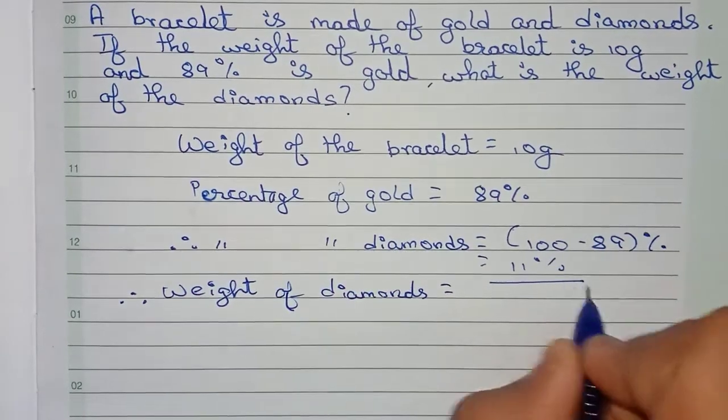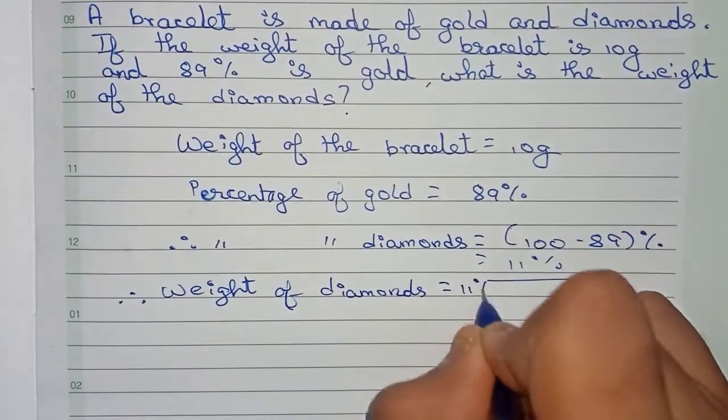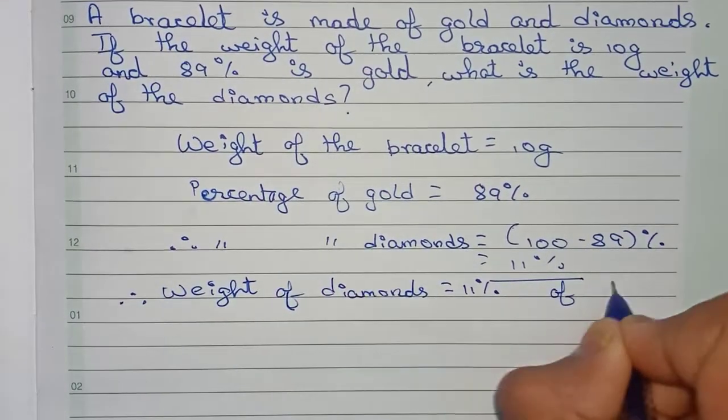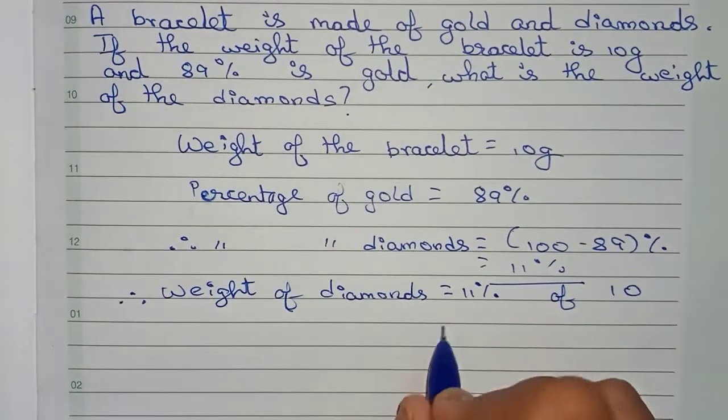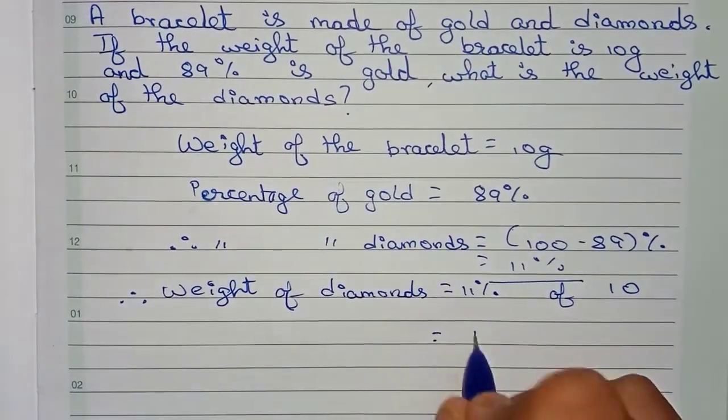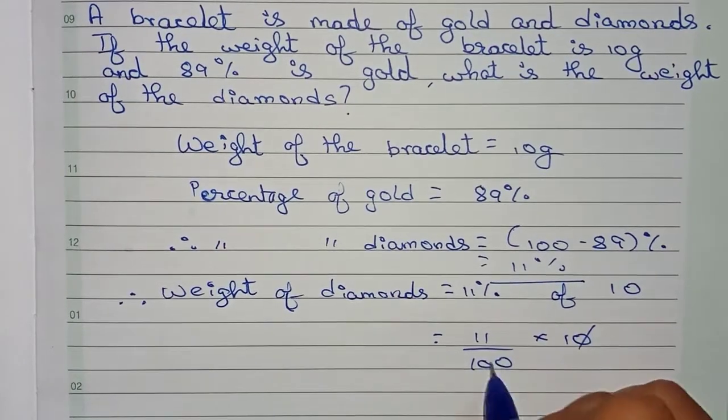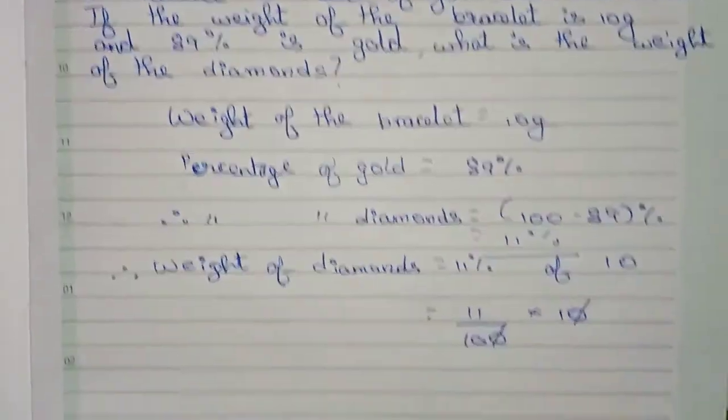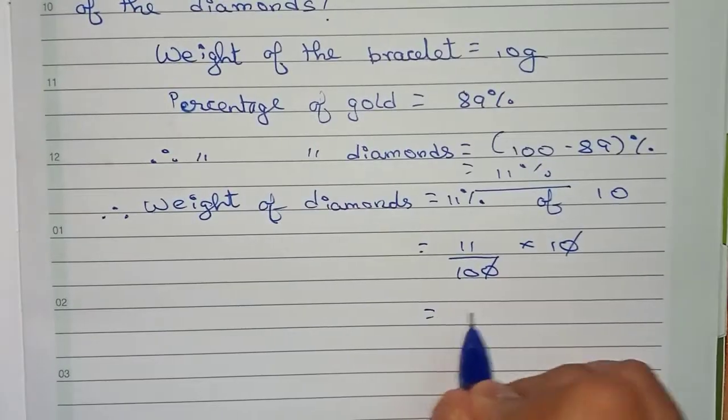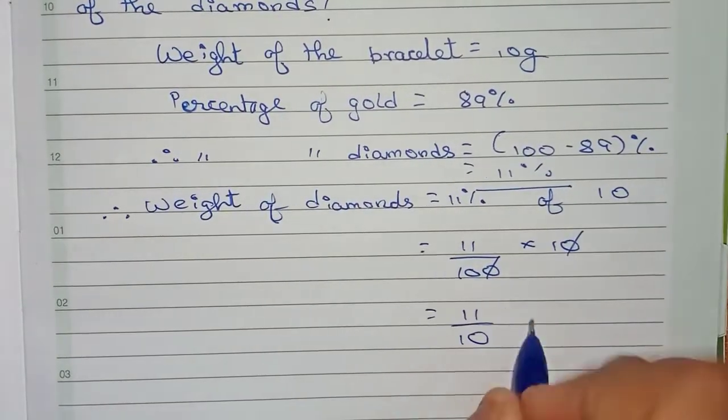Weight of diamonds will become 11% of 10 grams, that is the total weight. So 11% will act as 11 by 100 into 10. First we cut the zeros, so remaining 11 by 10.